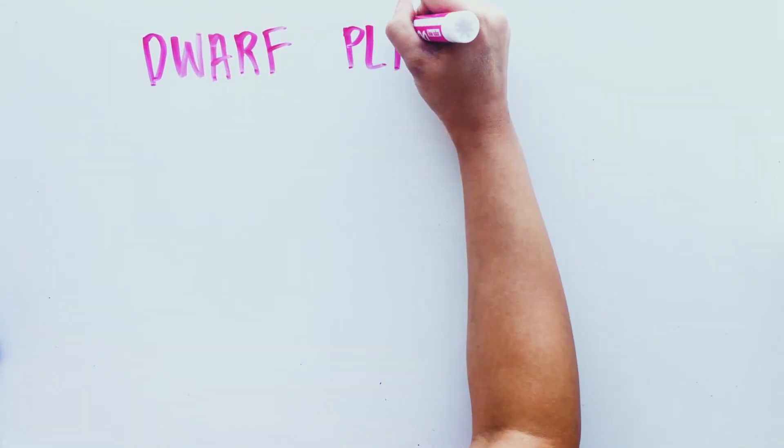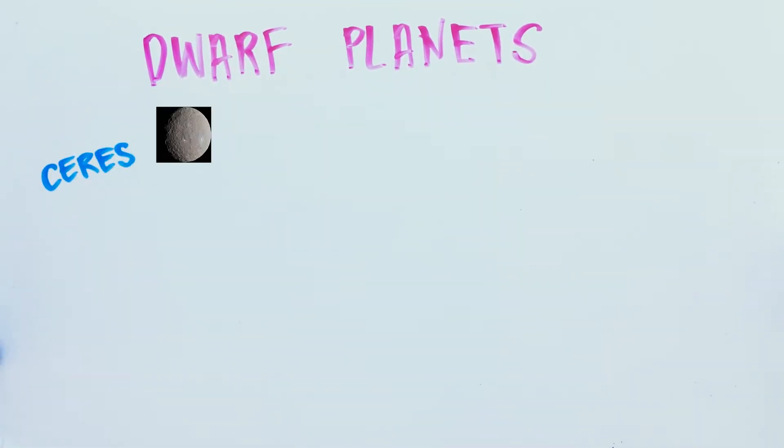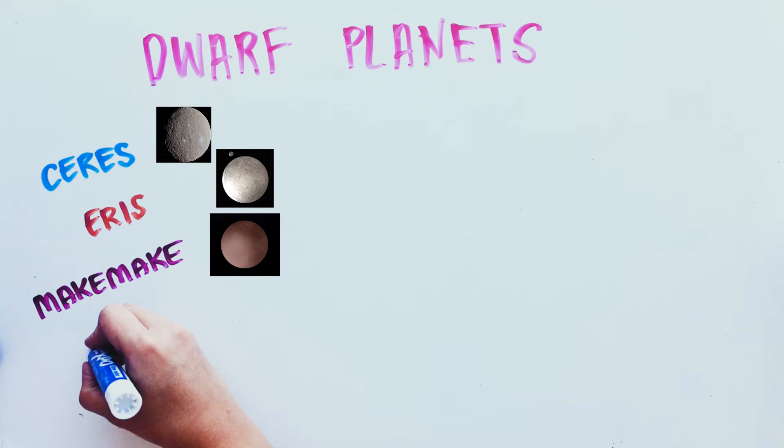There are five dwarf planets: Ceres, Eris, Makemake, Haumea, and Pluto.